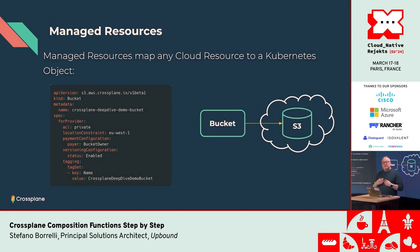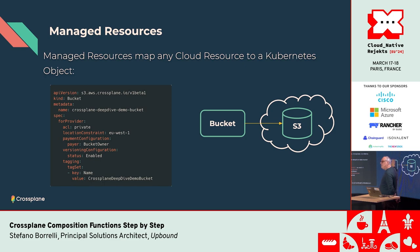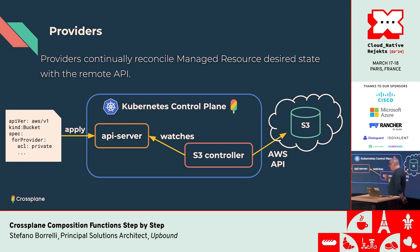We'll do a couple of core concepts - Stefano will talk for 15 minutes and then Jared will take over. The first concept is a managed resource: the fundamental building block of Crossplane. We take an object that's outside the Kubernetes cluster and create something like a digital twin of it. A managed resource is a high-fidelity representation of the remote object - in the case of an S3 bucket, the CRD is basically a one-to-one mapping of the remote API.